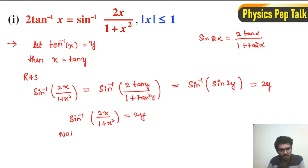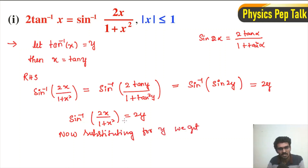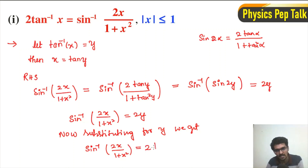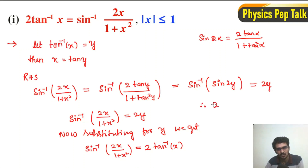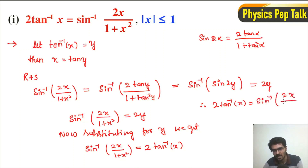Now substituting back for y, since y is equal to tan inverse of x, we get sin inverse of 2x divided by 1 plus x square is equal to 2 tan inverse of x. Therefore we have proved that 2 tan inverse of x is equal to sin inverse of 2x divided by 1 plus x square. This is the required result.